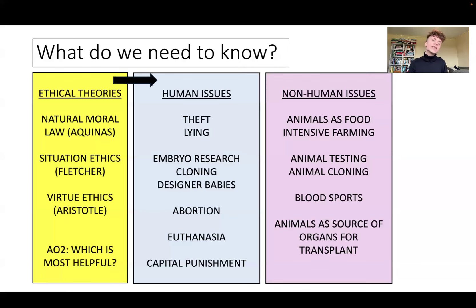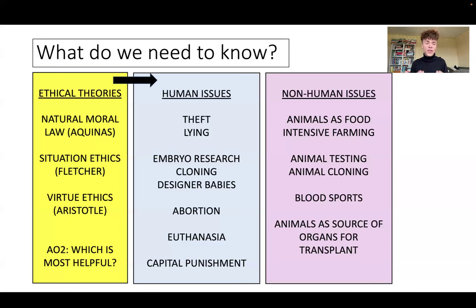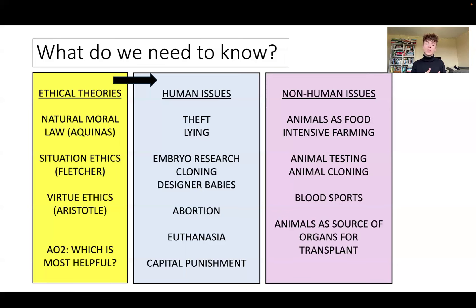We then need to know the human issues named on the AQA specification. These are: theft, lying, embryo research, cloning, designer babies, abortion, euthanasia and capital punishment. It's really important that we start thinking about what each of those ethical theories would say about these issues — specifically, whether they would support or oppose each issue.